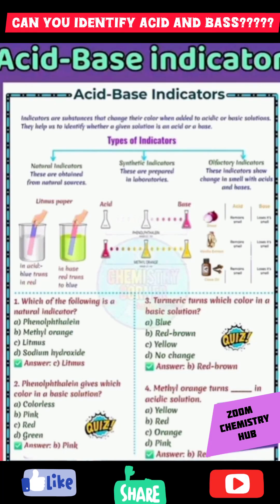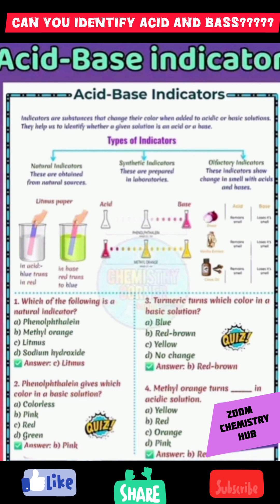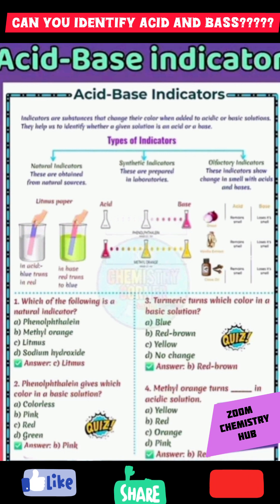Hello amazing learners! What is an acid-base indicator? Indicators are substances that change their color when added to acid or basic solutions. They help us to identify whether a given solution is an acid or a base.